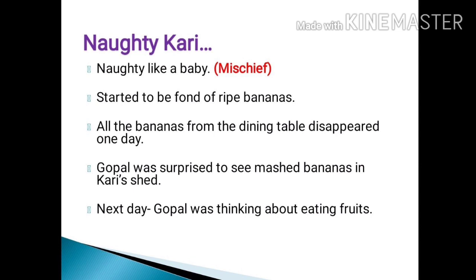Kari was very naughty and started doing so many naughty things when he started eating bananas. Usually Kari would eat only twigs and leaves, but someone introduced bananas to Kari. From that day onwards, Kari started eating bananas and became very fond of ripe bananas. Gopal's parents would keep large plates full of fruits on the dining table. One day a plate full of bananas disappeared, and after this incident, Gopal found some smashed bananas in Kari's pavilion.